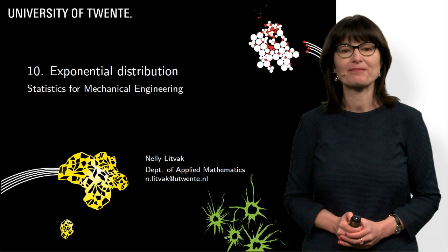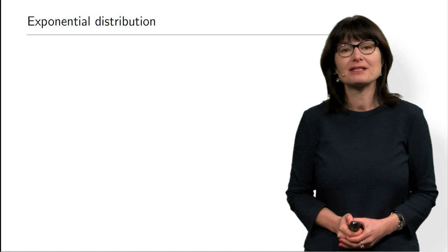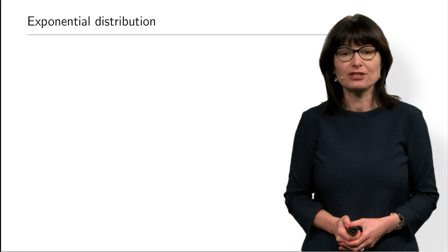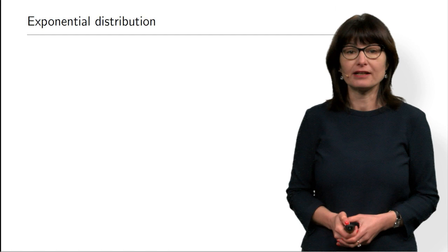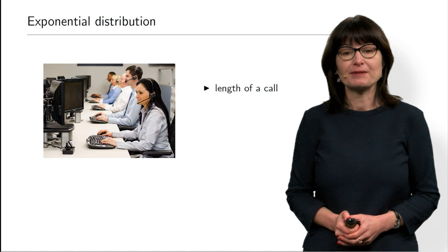Hello everybody and welcome to this micro lecture about exponential distribution. We already discussed before that every distribution describes some real life situation. What a probability distribution does in general is it distributes a probability mass around the real line. How it distributes — which numbers are more likely and which are less likely — depends on what real life situation you want to model.